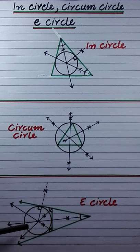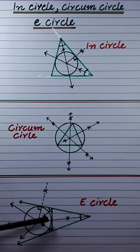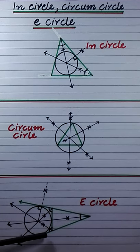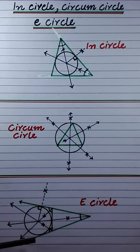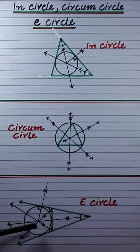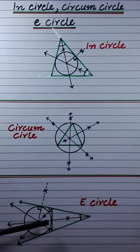Now dear students, if a circle touches one of the three sides of a triangle externally and the extended parts of the remaining two sides internally, then the circle is called an escribed circle or E-circle. To draw an E-circle, first we have to draw bisectors of the exterior angles of the triangle.